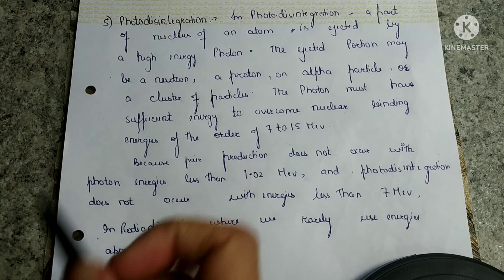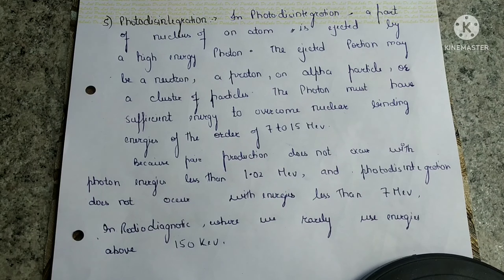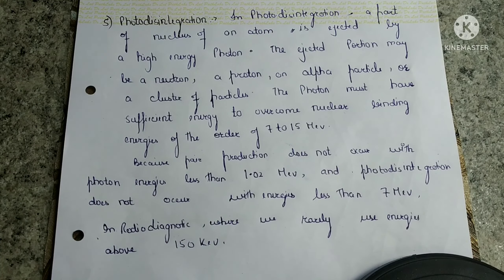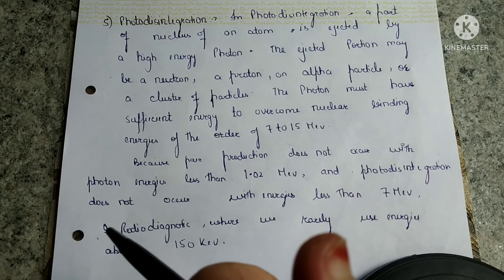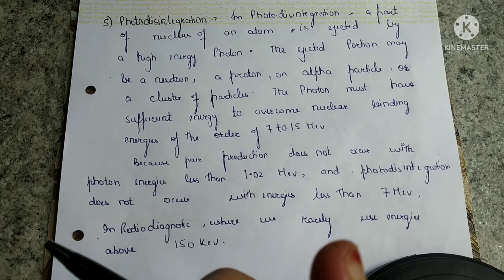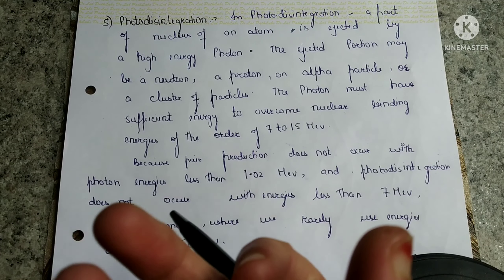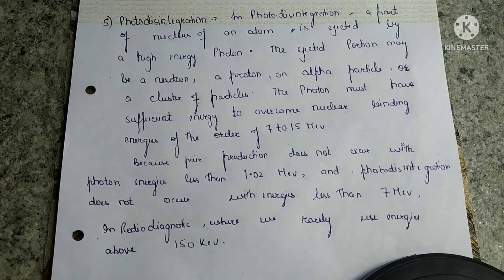Now let's move to our fifth and last interaction: photodisintegration. This interaction also does not occur in the diagnostic energy range, so it also has no importance in diagnostic radiology. Here, a photon with very high energy takes out part of the nucleus of an atom. As we know, the nucleus is made up of protons and neutrons, so either a proton or neutron is taken out of the nucleus. The photon must have sufficient energy to overcome the nuclear binding energy — the energy that holds the nucleus together. The energy range for this should be 7 to 15 mega electron volts.